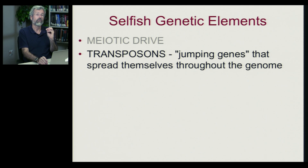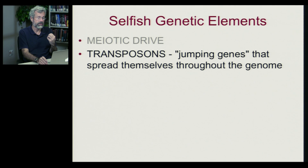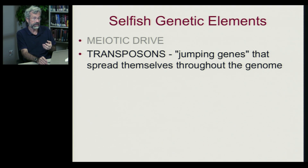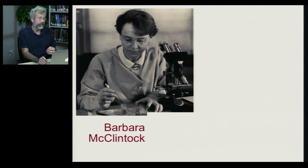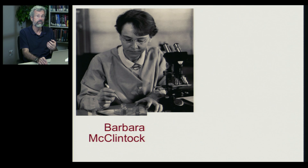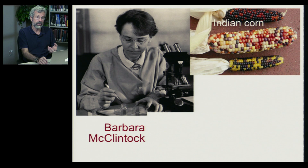Now I want to get to a more widespread form of genetic element that is very, very selfish. These are called transposons, also known as jumping genes, that spread themselves throughout the genome. These were discovered by a very famous Nobel Prize-winning geneticist, Barbara McClintock, back in the 1950s and 60s.